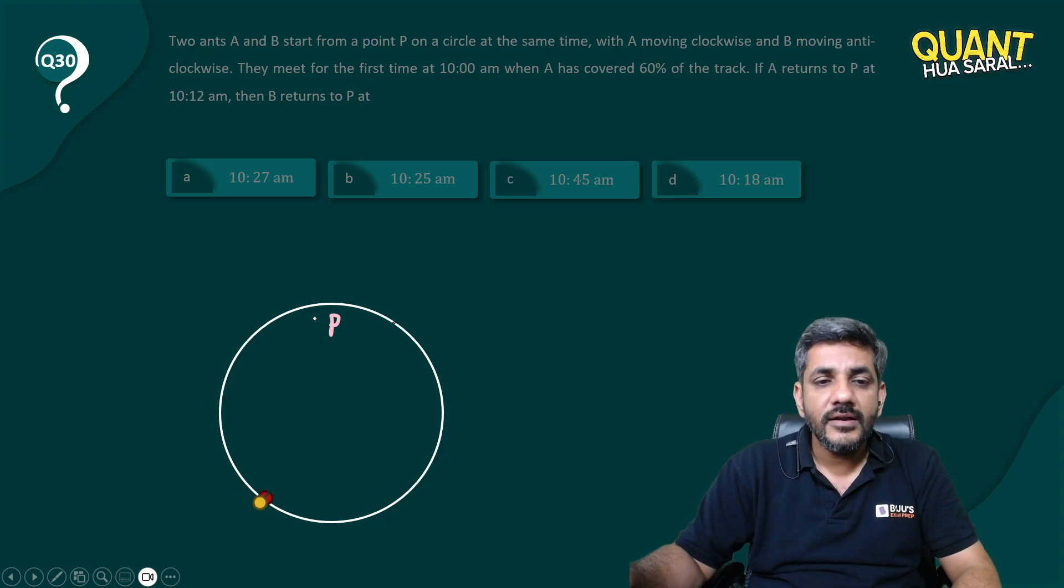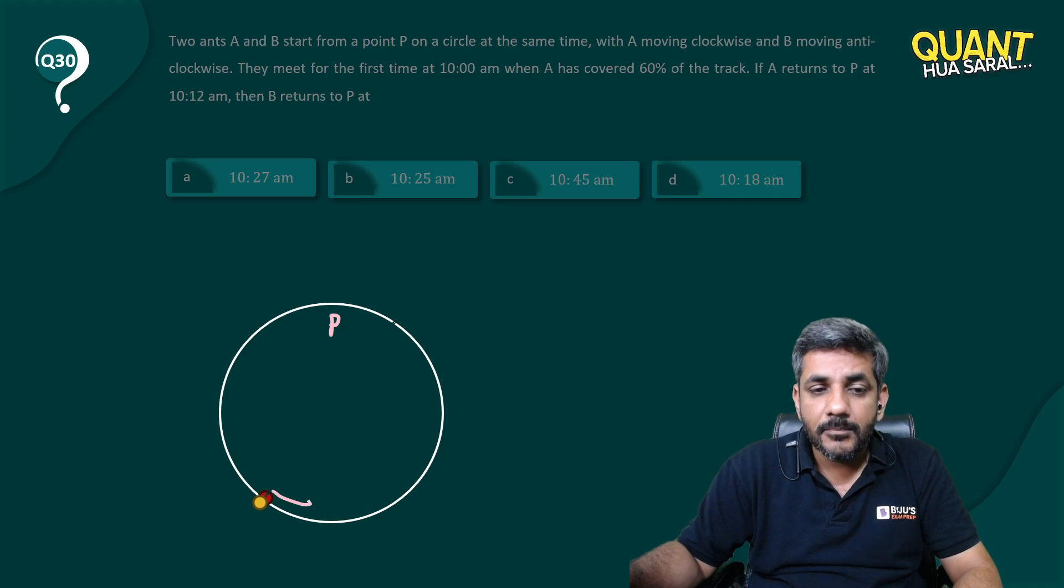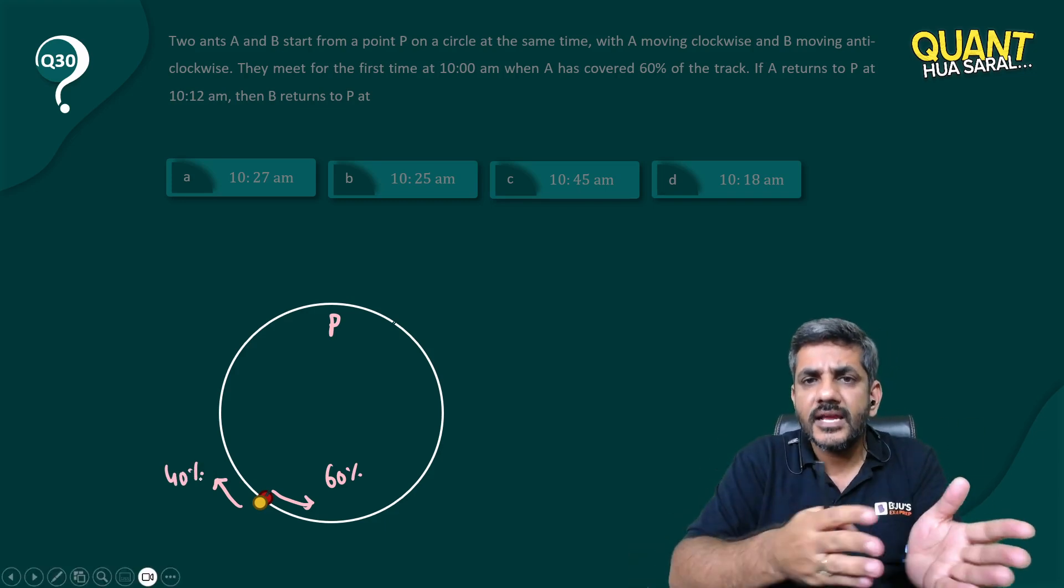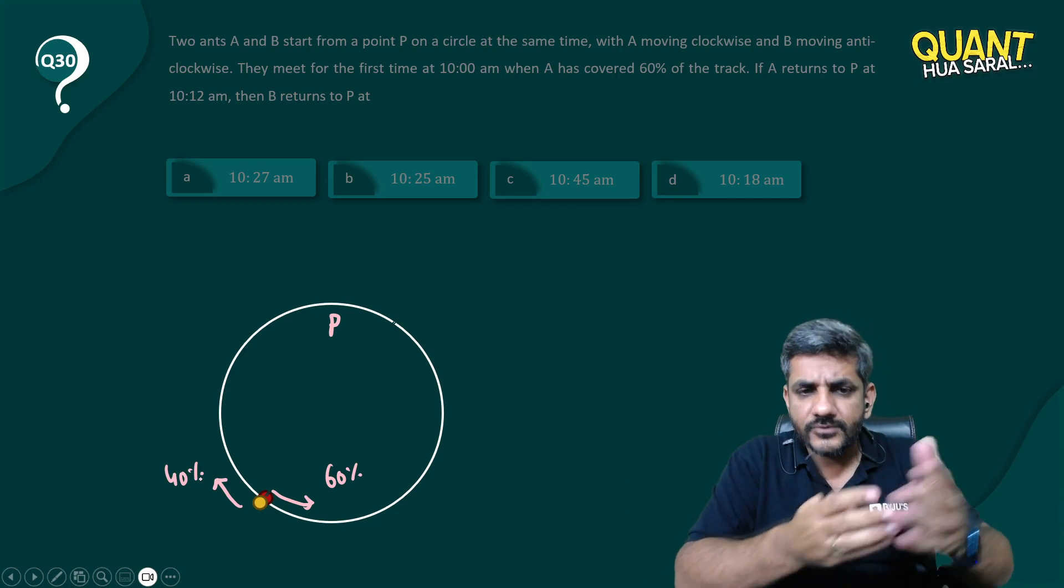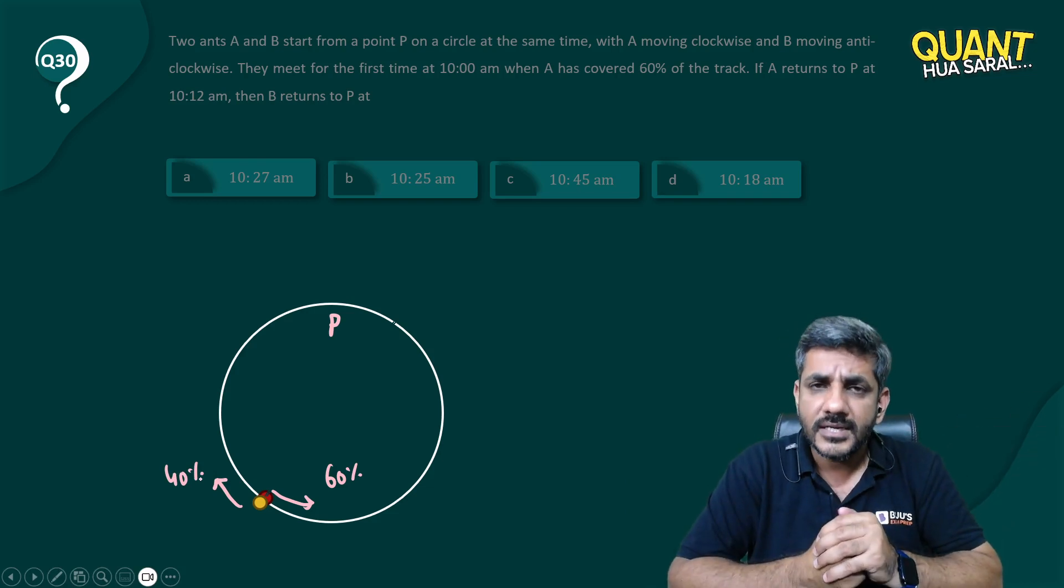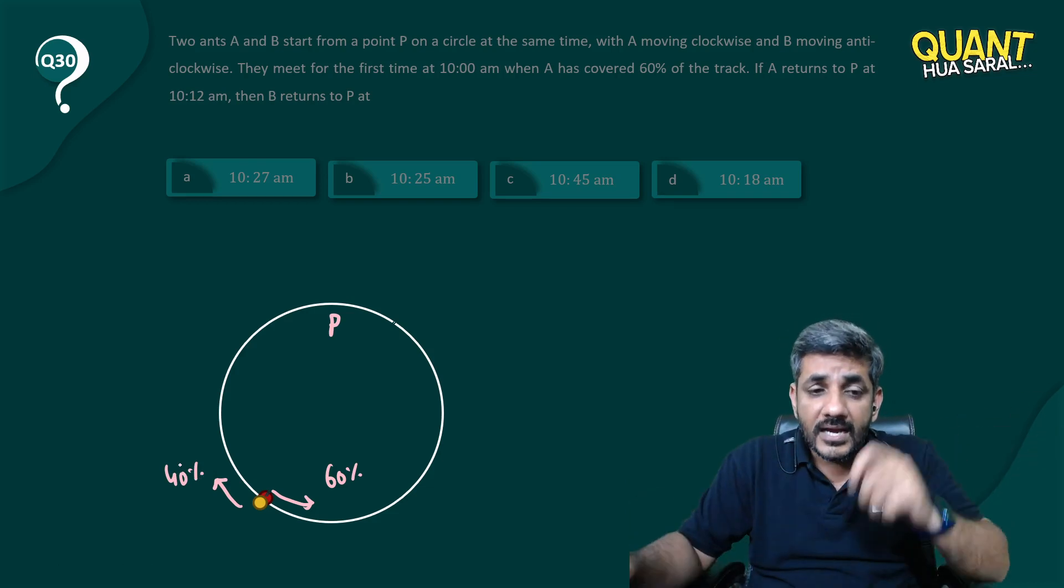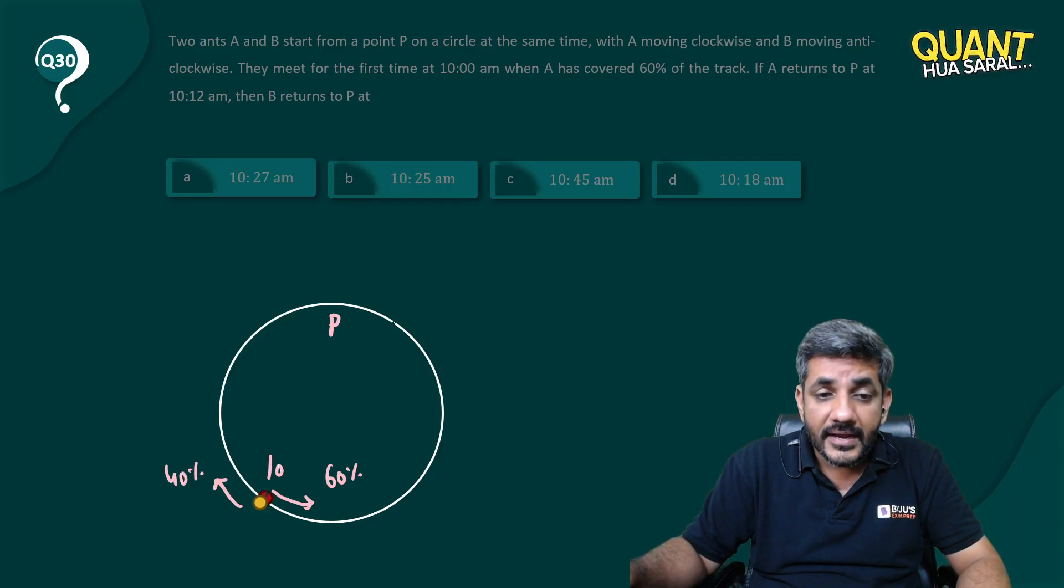This is how they are moving. They meet at this point. I see that the red one has completed 60% of the track and the yellow one has completed 40% of the track. Of course it is given to us that A has completed 60% of the track, so the other one would have completed 40% of the track. They met at this point at exactly 10 o'clock.